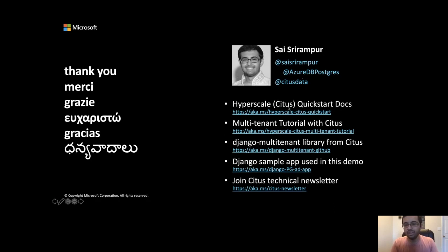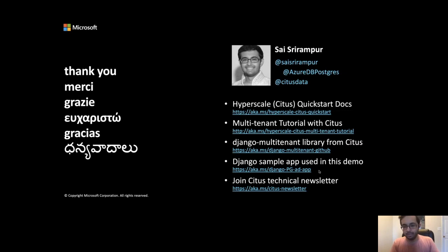I have some resources: the Hyperscale Citus docs and quickstart docs that walk through how to deploy a Hyperscale Citus cluster in a seamless way. There are also some tutorials related to Hyperscale Citus and H-TAP. And there is the Citus newsletter — please feel free to sign up. There are around 12,000 subscribers and it's one of the best mediums to stay updated on what is going on in the Postgres and the Citus community. Thank you, have a great day.